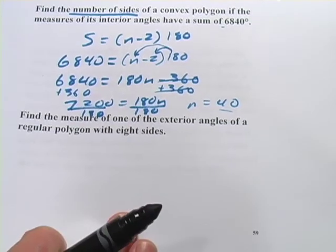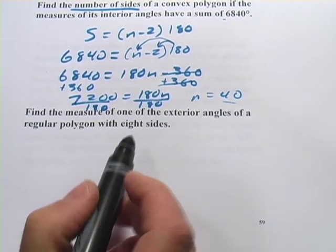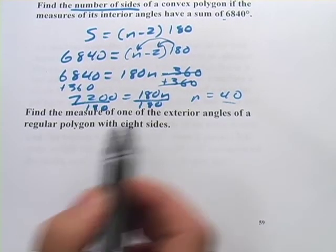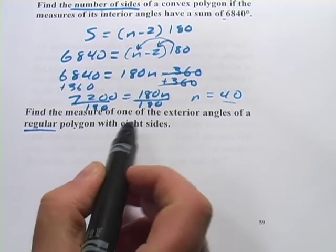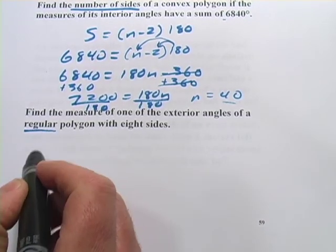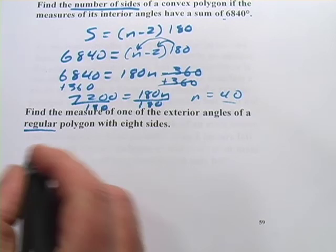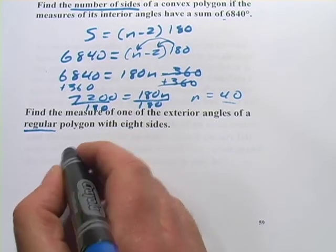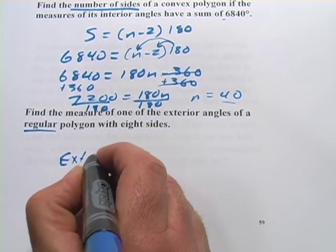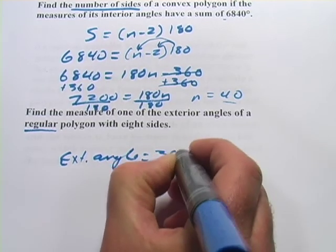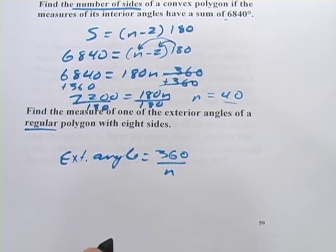All right, one more. This one says, find the measure of one of the exterior angles of a regular polygon with eight sides. So, that's good it's regular because our formula works for regular polygons. And remember, the exterior angle was 360 divided by the number of sides.